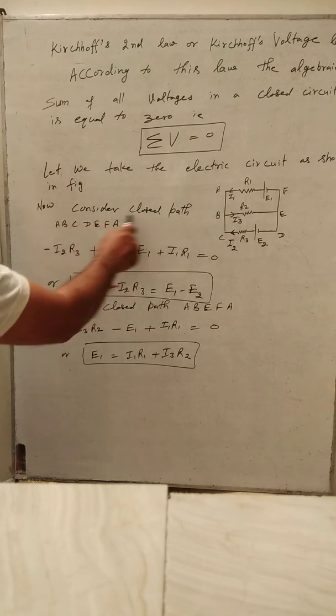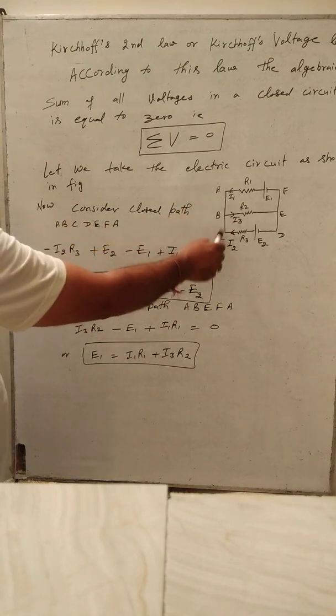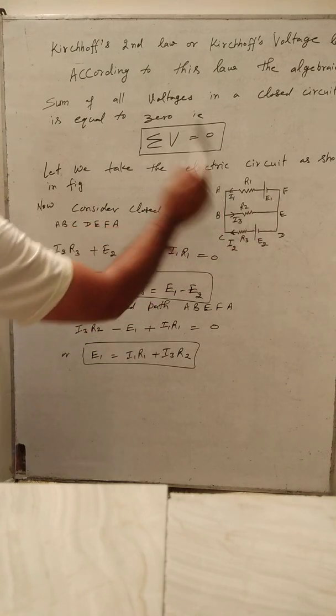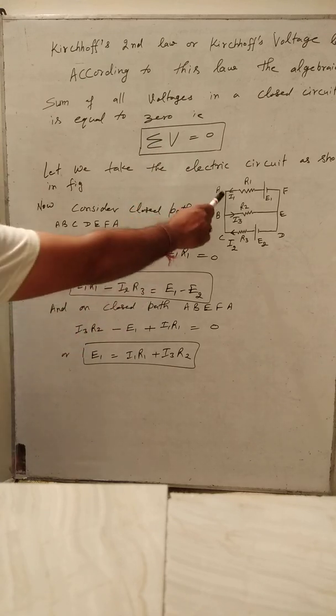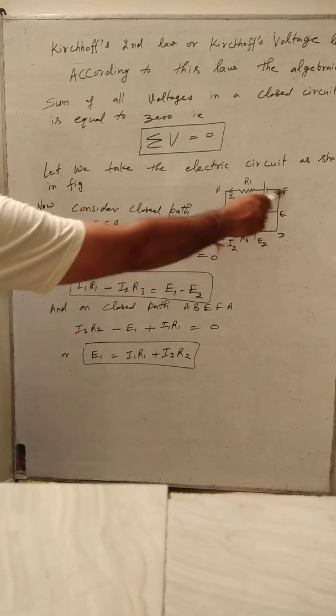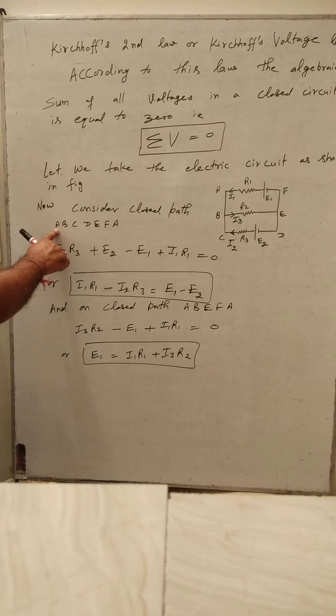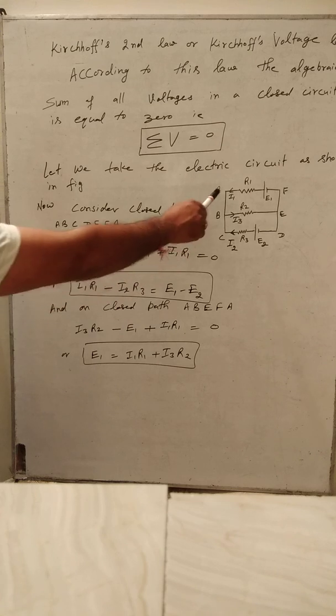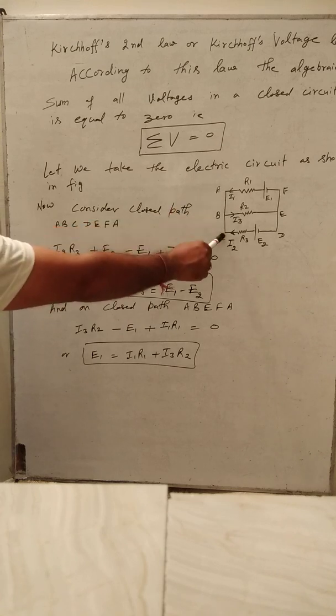Now, for example, we consider the closed path A, B, C, D, E, F, A. Now, we start from here: A, B, C.